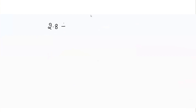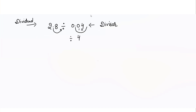For example, 2.8 divided by 0.04. Here 0.04 is the divisor. What we need to do is shift the decimal point after all the digits in this decimal number — we have 4, so we shift to get just 4, a whole number. Similarly, if I move the decimal point two digits in the divisor, I have to move it two digits in the dividend as well. That means I need to add a zero, giving 280 divided by 4.